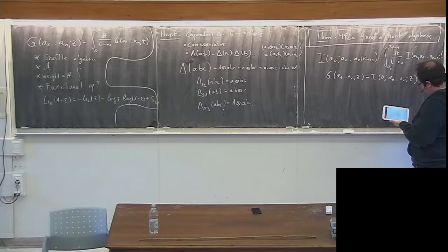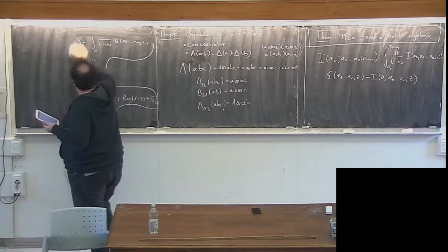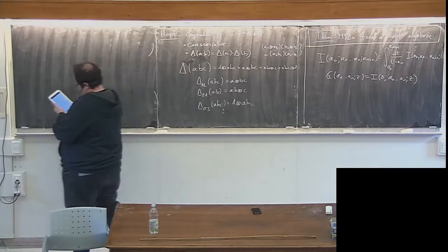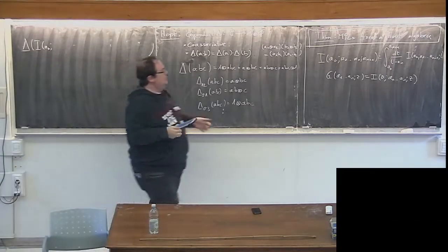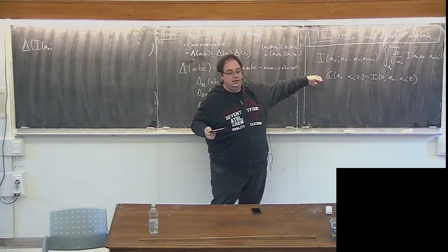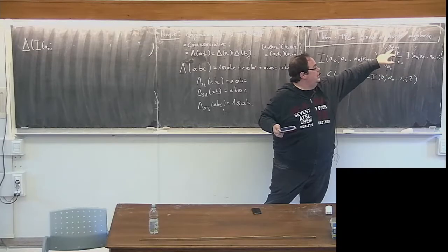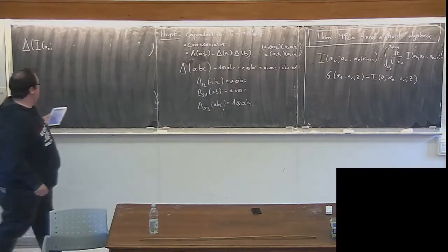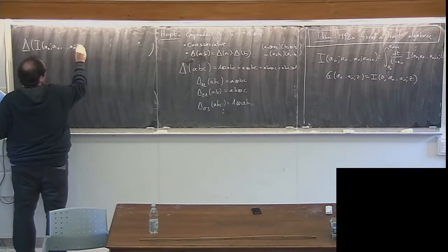The general formula for the co-product — I'll write it down once and then we'll quickly forget about it. It's clear that the I's and the G's essentially span the same space, because I can always split the integration from A0 to A_{N+1} into the integral from zero to A_{N+1} minus the integral from zero to A0. So if I give you the formula for delta of I, I also give you the formula for delta of G.